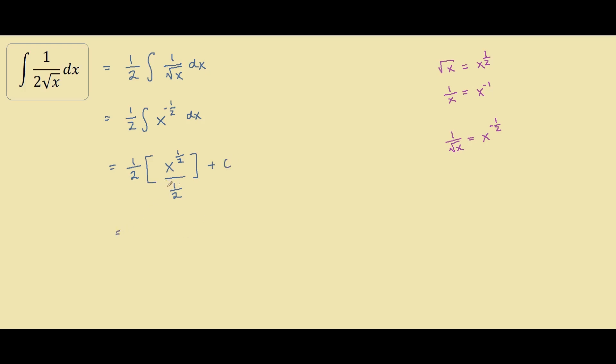Our next step: we know that dividing by half is the same thing as times by 2. So half times 2 equals 1, so we are left with x to the power of half plus c. Or another way of writing this is square root of x plus c. And this is our answer.